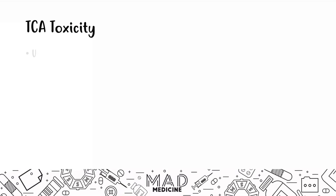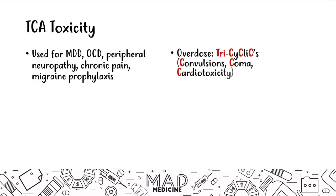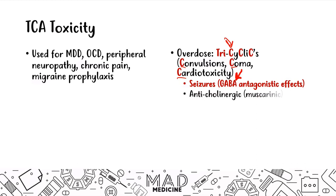The third of the four psychiatric emergencies is tricyclic antidepressant toxicity. TCAs are usually used for major depressive disorder, OCD, peripheral neuropathy, chronic pain, and migraine prophylaxis. In TCA overdose, patients are going to have the tricyclics — or three C's — for their side effect profile. The first C stands for convulsions or seizures, because TCAs have a GABA antagonistic effect. You'll also have anticholinergic or antimuscarinic effects like hyperthermia, flushing, ileus, and miosis.